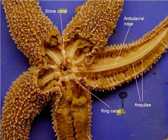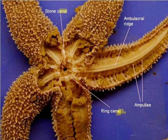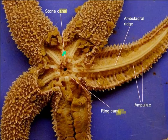The ampulla and tube feet look something like a medicine dropper — the ampulla at the top and the tube feet at the bottom. Additionally, we can look at and see the two different stomachs that are present, along with some digestive glands and some gonads.